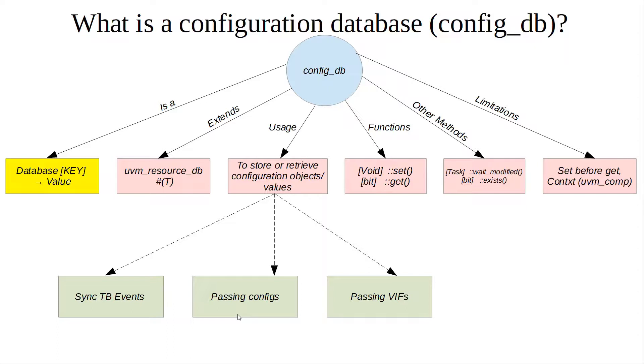You set a configuration database and pass it to all the other agents. Config DB is a very easy way to set it in one place and have it available throughout the testbench to all the uvm components. These three usages are what someone fairly new to UVM should know.